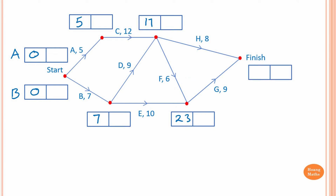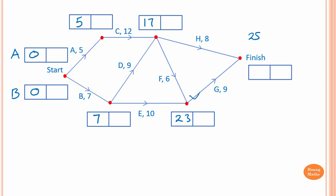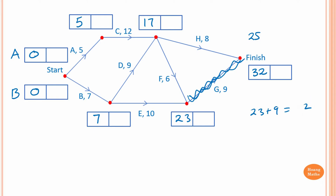To finish the project, you need to finish activity H and activity G first. To finish activity H, 17 plus 8 is 25. To complete activity G, 23 plus 9 is 32. The largest value is 32. If you write 25 hours, activity G has not completed. So you cannot finish until you finish both activity G and H. The earliest time you can finish the project is 32 hours.